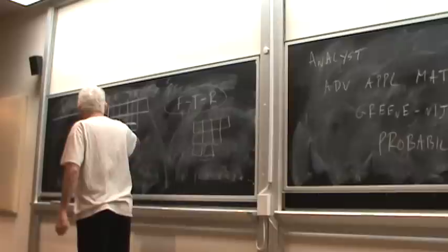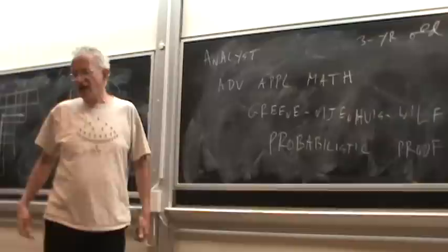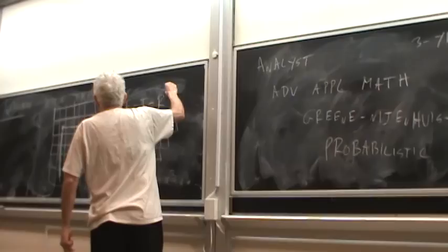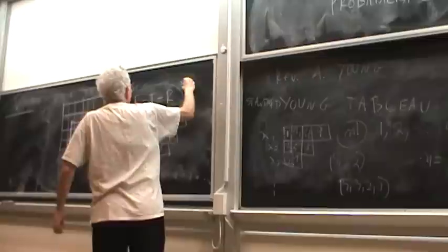The hook length of a cell is simply how many cells are there in the hook. One, two, three, four, five, six, seven, eight. So the hook length of this cell right here happens to be eight. So let's have a table. This is not a Young tableau, this is the table of the hook lengths.